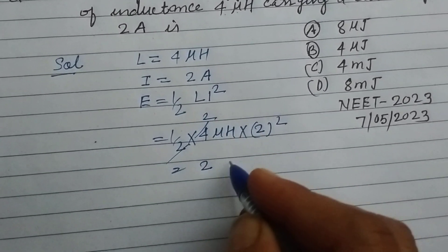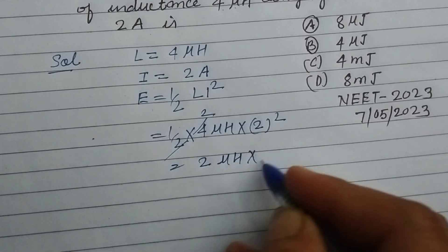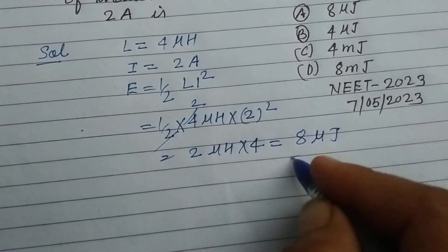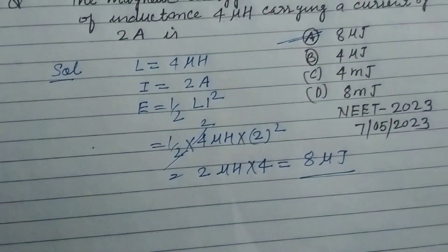So this is 2, 2 microhenry into 4, so this is 8 microjoule. 8 microjoule is the answer of this question.